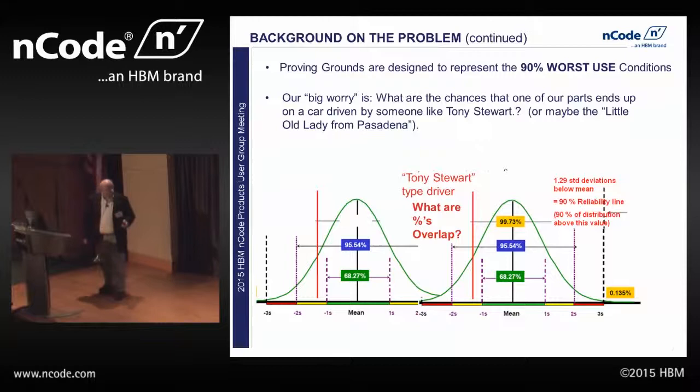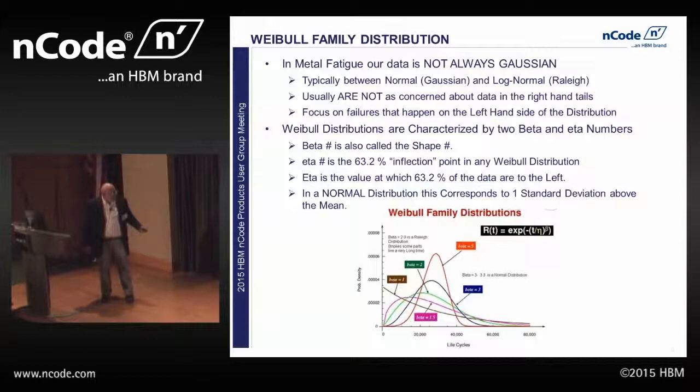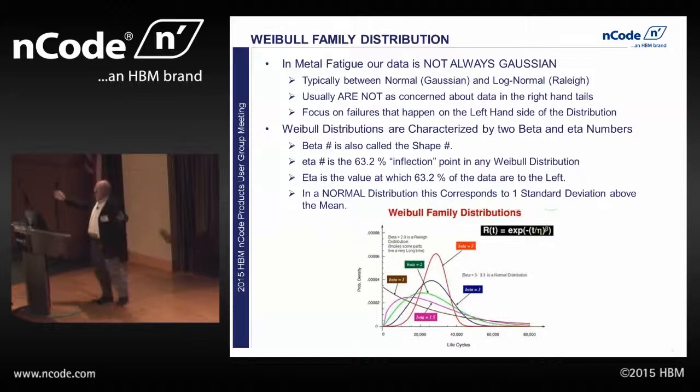In metal fatigue, all the distributions I've shown so far are Gaussian normal. Our data isn't typically Gaussian — it's somewhere between normal or log normal, which means it's got a tail, like a log normal distribution. We're usually not concerned about data way over on the right — those are the god parts, they're going to live forever. We're more worried about the data on the left, and that's one of the nice things about the Weibel plot: it shows those curves very well on what's going on way over on the left-hand side.